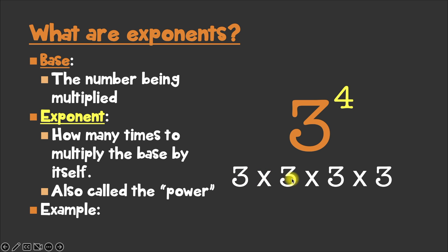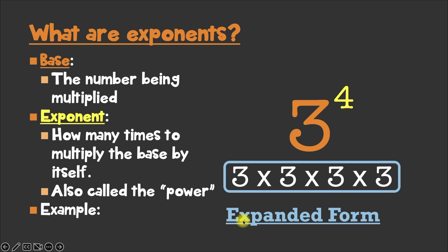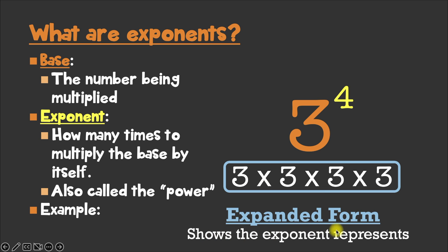Well, it's 3 to the fourth power, so it's going to be 3 times 3 times 3 times 3. Because the 3s are our base, and the 4 is our exponent, which tells us how many times we're multiplying the base — 1, 2, 3, 4 — to the fourth power. Now remember, that is our expanded form, and that just shows us what the exponent represents, or what it means.